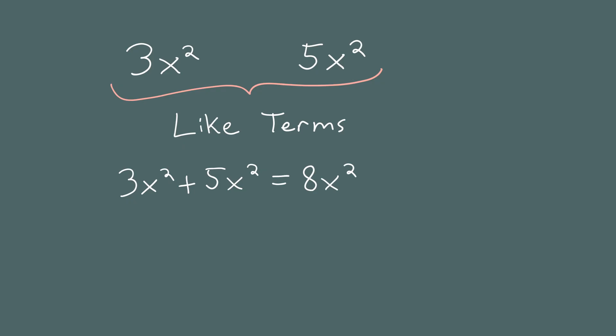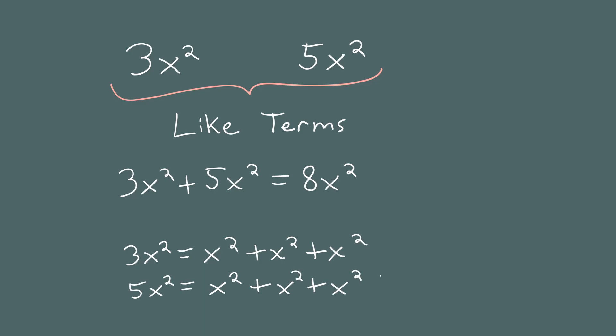Try not to memorize this rule, but instead understand it. Remember, multiplication is just repeated addition. So 3x squared is the same as x squared plus x squared plus x squared, and 5x squared is the same as x squared added five times. So if you combine 3x squareds with 5x squareds, you get 8x squareds. This is why 3x squared plus 5x squared equals 8x squared. Even though we don't know what x is, we can still add these like terms together.